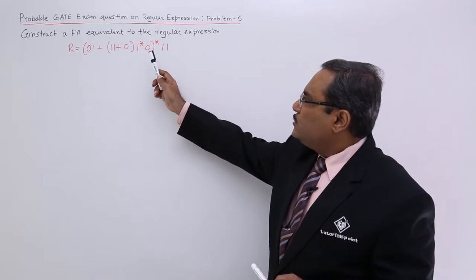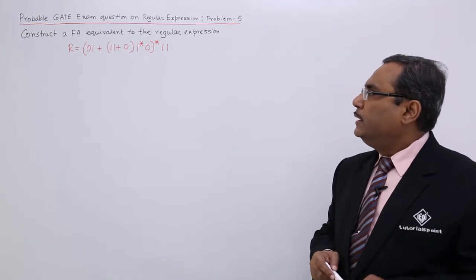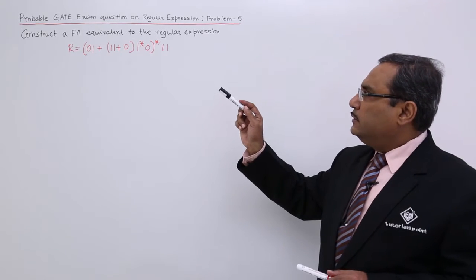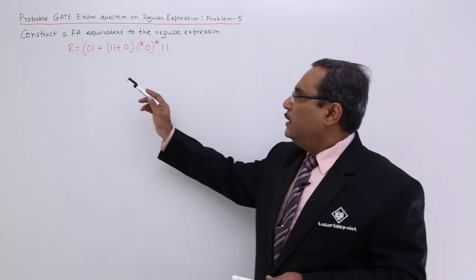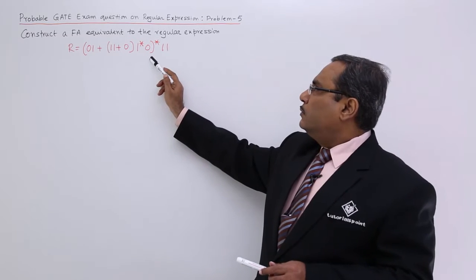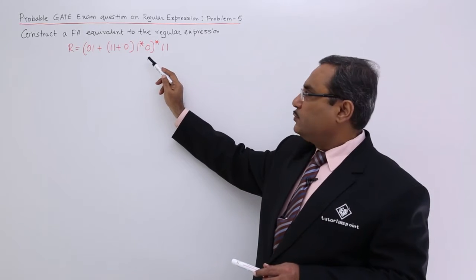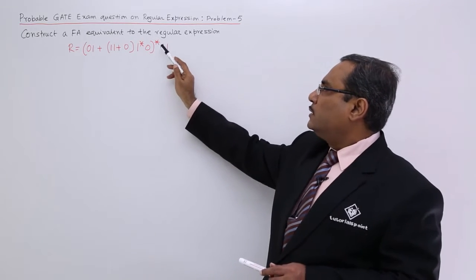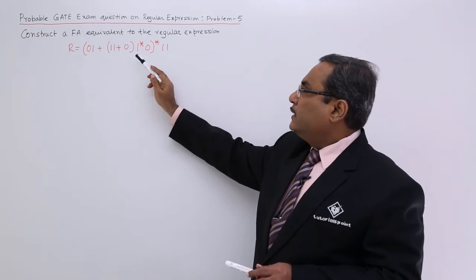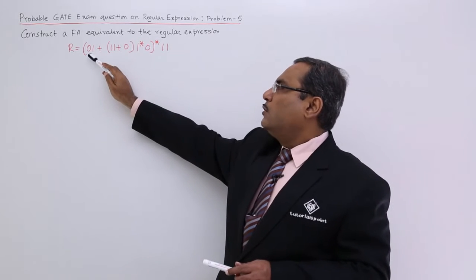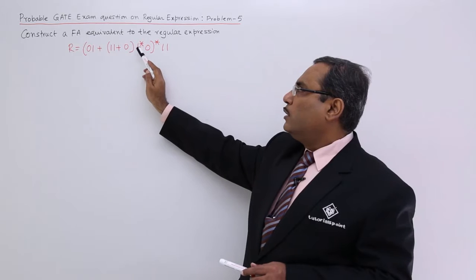At first we should have to look at this particular regular expression and I can write it in the simpler form like r1 star r2. I can write this one in this way. That is r1 star r2 and that r1 star is nothing but r1 1 plus r1 2.